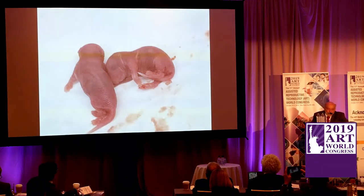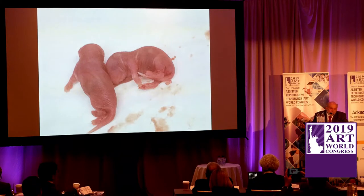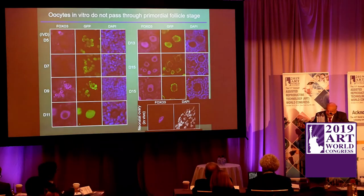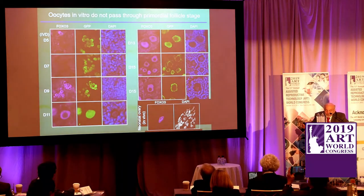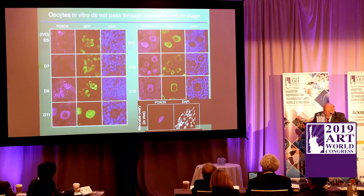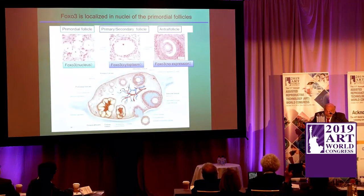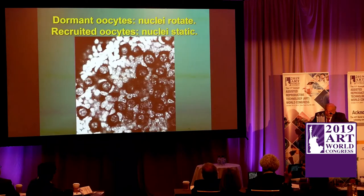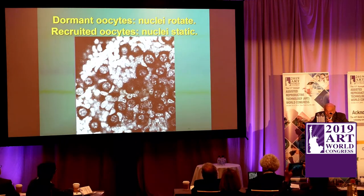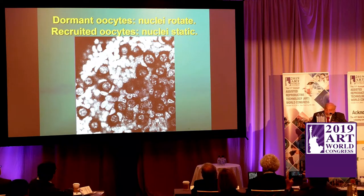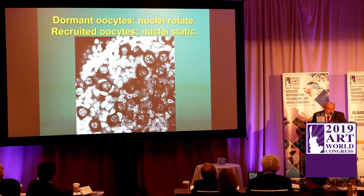These are the first two mice that came from IPS cells — all the others I went through quickly came from embryonic stem cells, but these are the first two from actual skin cells. Oocytes in vitro do not pass through the primordial follicle stage because they don't have FOX3 intranuclear. So how do we get FOX3 to go intranuclear, and how do we therefore make an artificial ovary? We want to get the nuclei to rotate — when the nuclei are static, the oocytes develop; if you get the nuclei to rotate, that's a mechanical phenomenon that can freeze the primordial follicle.